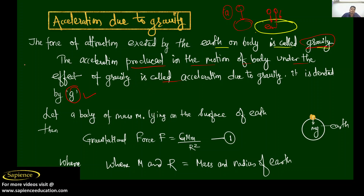We are not talking about capital G, which is the gravitational constant. We are talking about small g — acceleration due to gravity. When an object is pulled by the earth, it will start coming down and its velocity will start increasing. That is called acceleration. If there is a force, definitely there will be an acceleration. The acceleration due to gravity is known as small g.